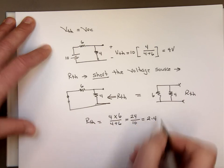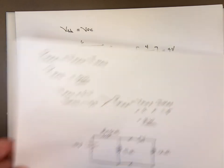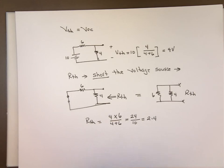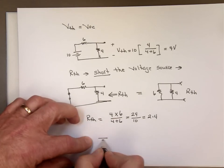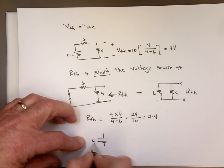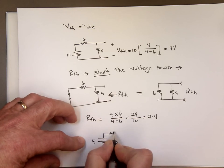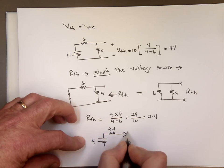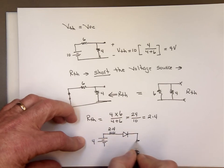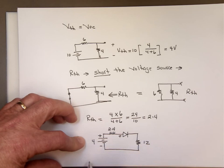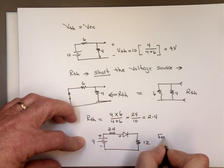So now we can take this ugly circuit that you see here and replace it with a voltage source of V thevenin, which is 4 volts, in series with a 2.4 ohm resistor. And here is my diode now, and there is my load resistor, the 12. Since the plus is attached to this end, this is in forward bias mode.